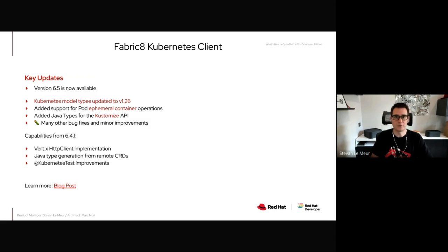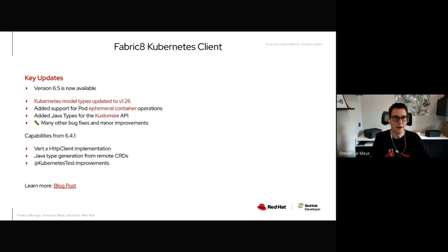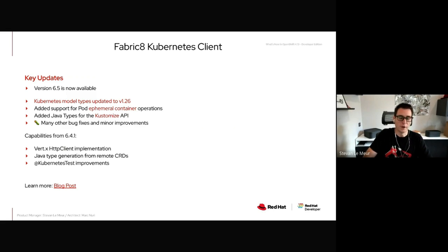We also added support for CronJob controller generation as well as setting resource limits on init containers through XML and DSL configuration. There are a bunch of bug fixes and other improvements — I invite you to read the blog post to learn more. The Fabric8 Kubernetes Client latest version available is 6.5. The Kubernetes model types have been updated to version 1.26, and we added support for pods with ephemeral container operations as well as Java types for customized APIs.